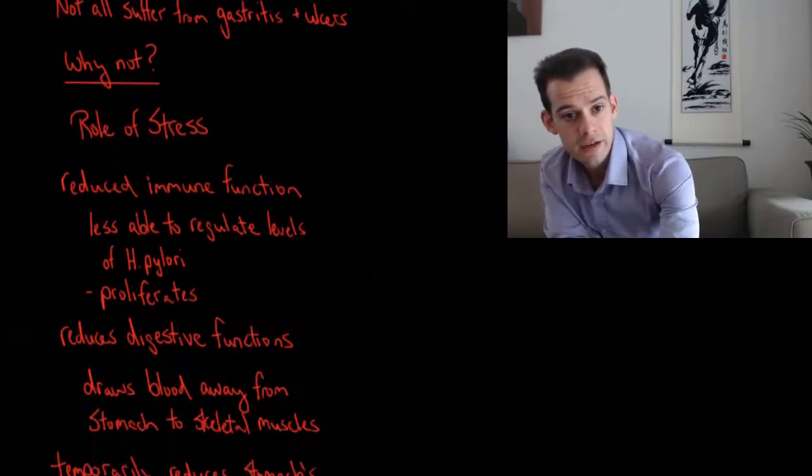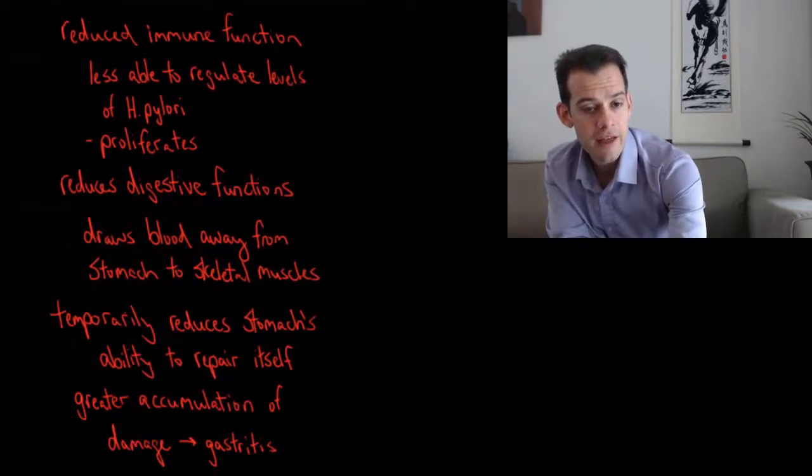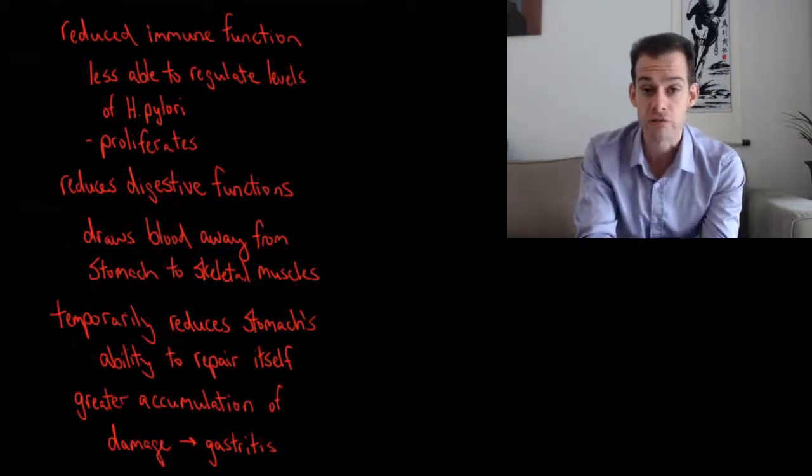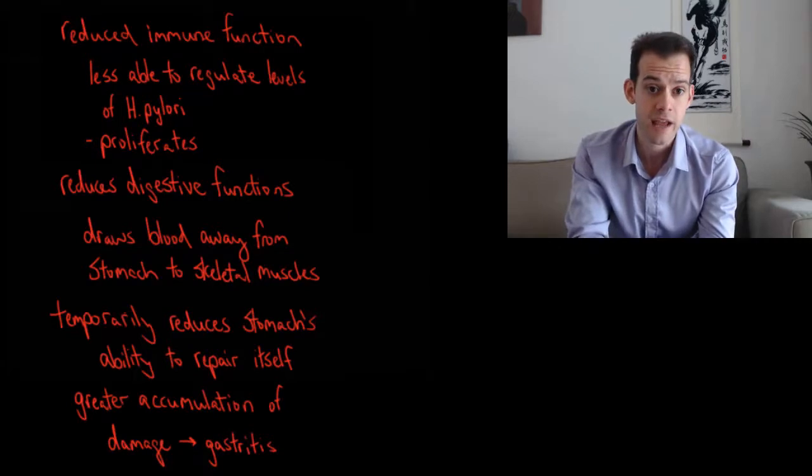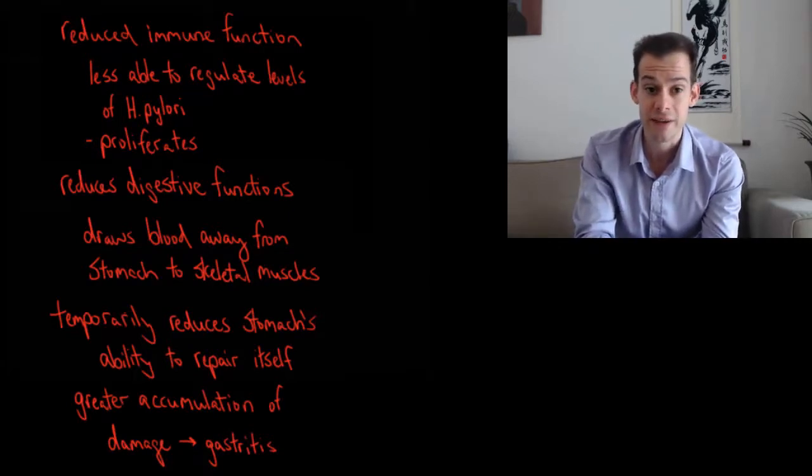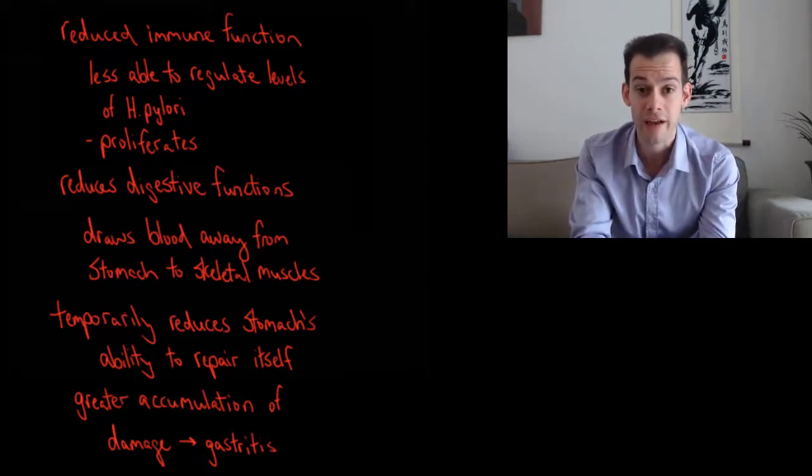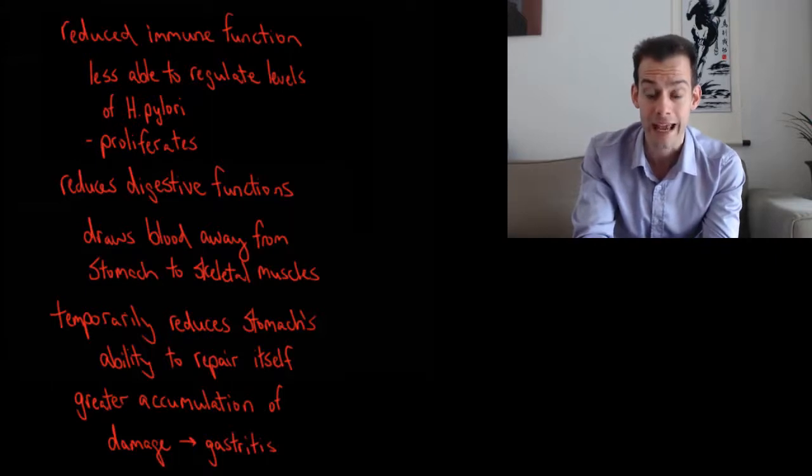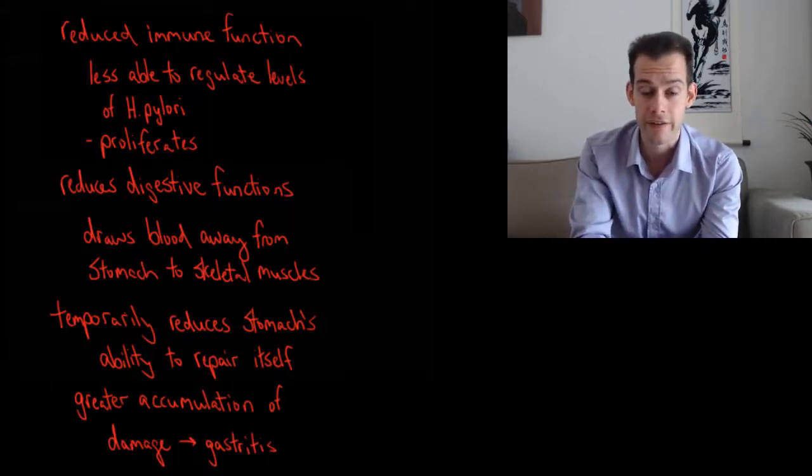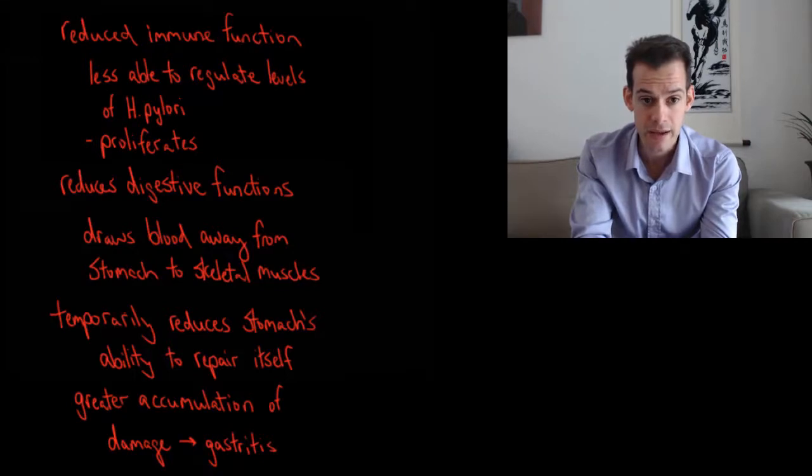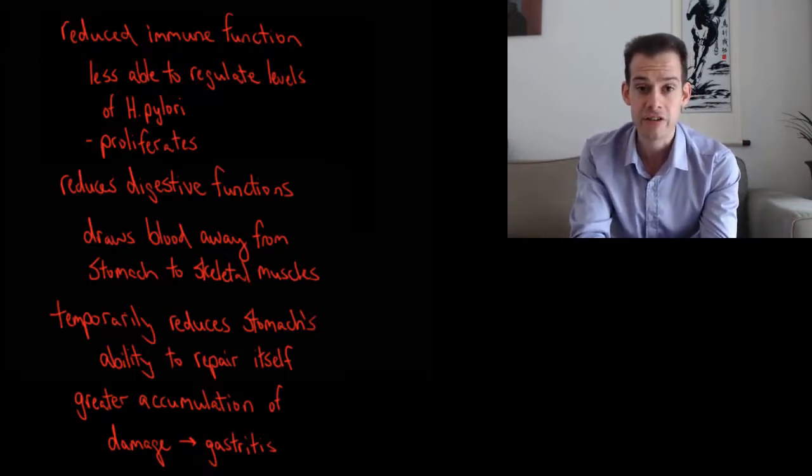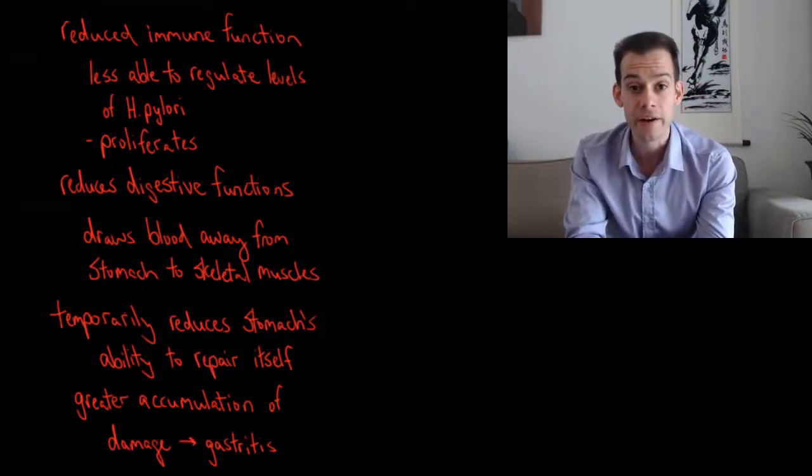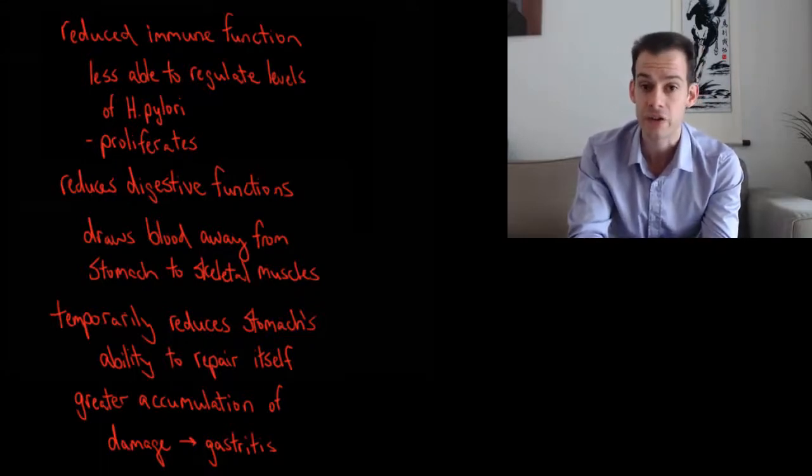Well the role of stress in ulcers is that first of all the chronic stress reduces immune function and what this means is that the immune system is less able to regulate levels of helicobacter pylori in the stomach and it proliferates. So now you have more of this bacteria and in addition chronic stress reduces digestive function and one of the ways that this happens is that blood is drawn away from the stomach to the skeletal muscles.